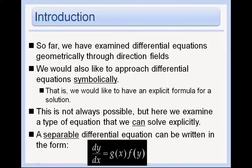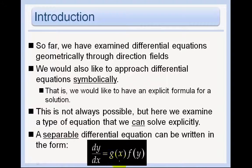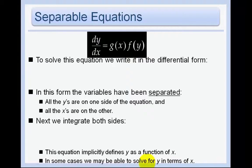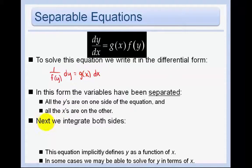A separable differential equation can be written in the form dy/dx equals g times f, meaning that we have some function dependent on x times some function dependent on y. To solve this equation, we write it in differential form: we get all the y stuff on the left, so 1 over f dy equals g dx, and all the x's are on the other. Now you integrate both sides — just take the antiderivative of both sides.